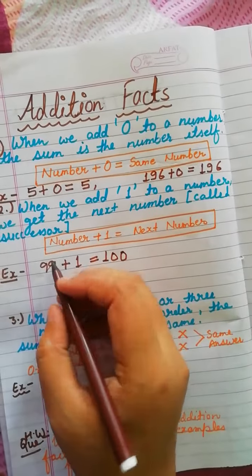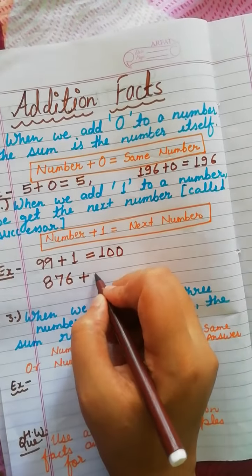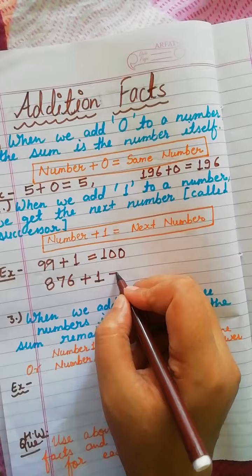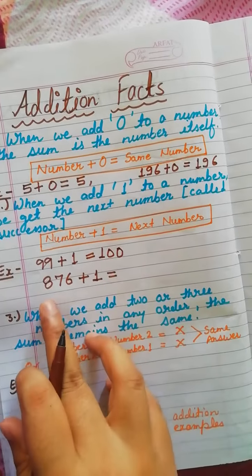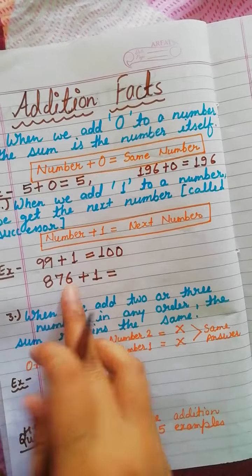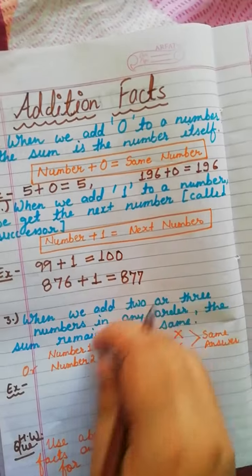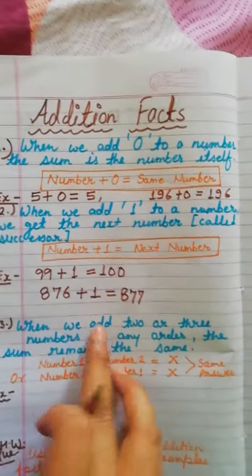100 will be your answer. Another example: 876 plus 1. We are adding 1 to the number 876. After 876, what is coming? 877. This is your answer.